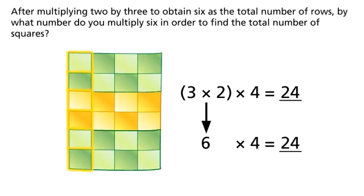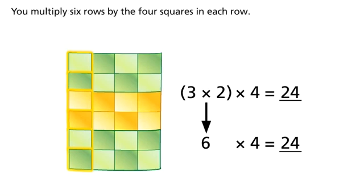After multiplying two by three to obtain six as the total number of rows, by what number do you multiply six in order to find the total number of squares? You multiply six rows by the four squares in each row.